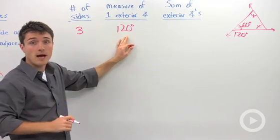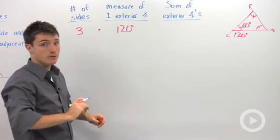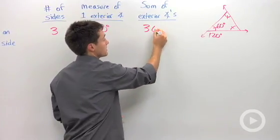To find this sum, a shortcut for adding is multiplication. I'm going to multiply three times 120, and I'm going to get 360 degrees.